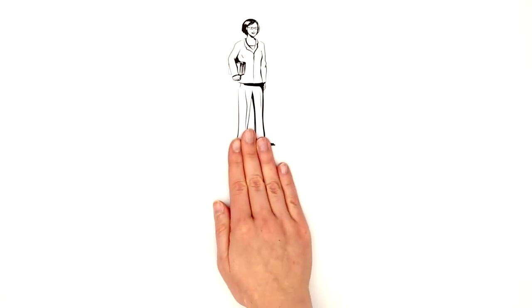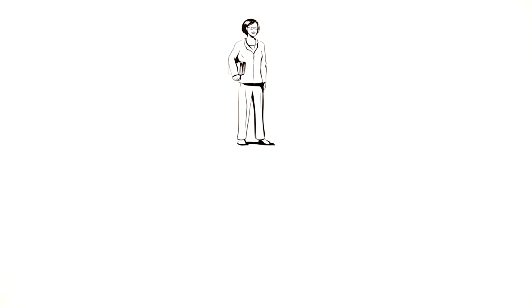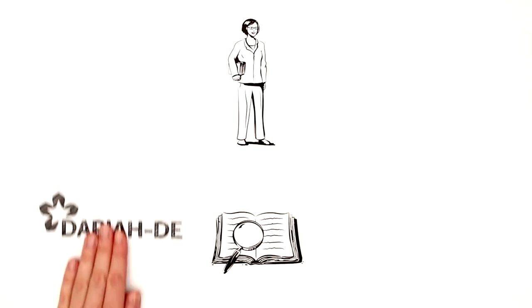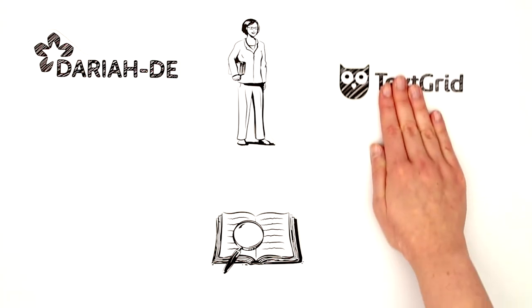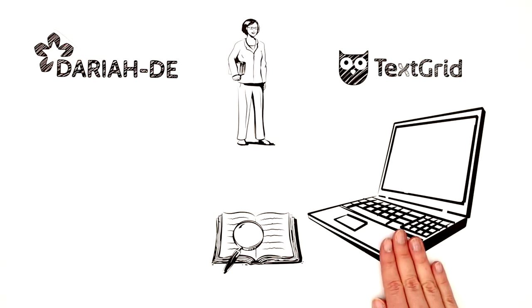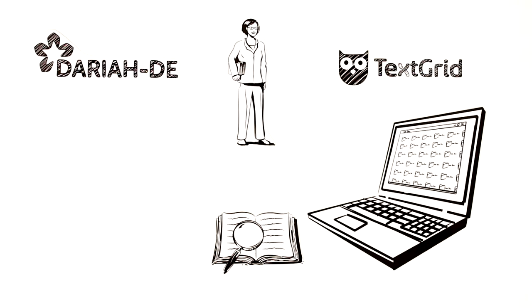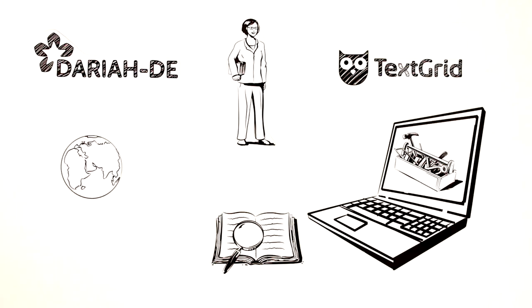Anna's glad that things are changing. On her current project, she's using the digital research infrastructures DARIAH-DE and TextGrid. Here, Anna can work on her research results, as can humanities researchers in other disciplines worldwide. There are many tools available for saving and working with data efficiently.